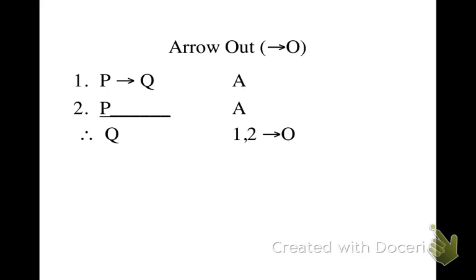The way the rule of arrow out works is if we have a conditional, and if we have the antecedent of that conditional on another line, then we can derive the consequent of that conditional by the rule of arrow out.